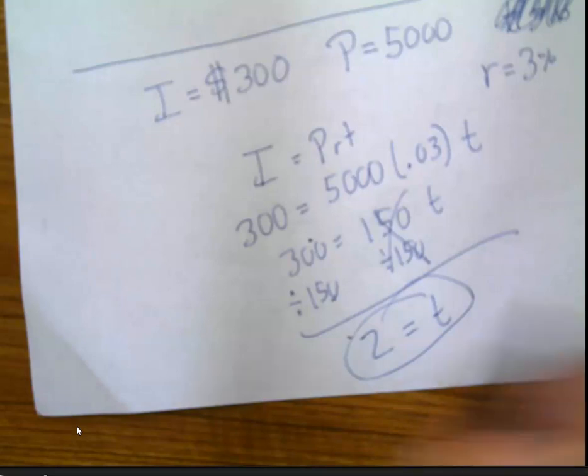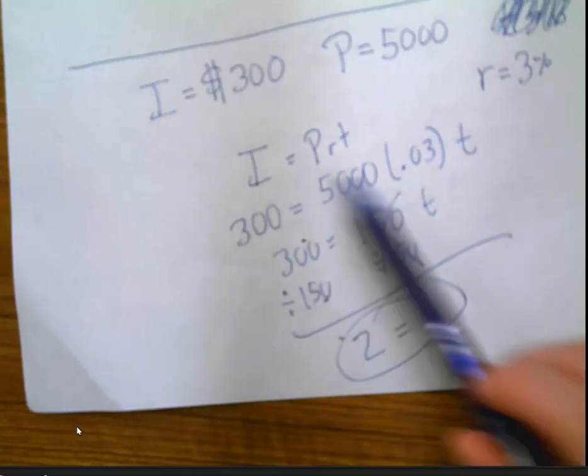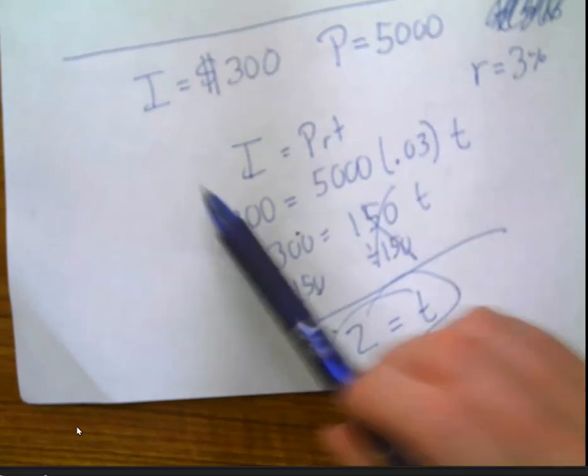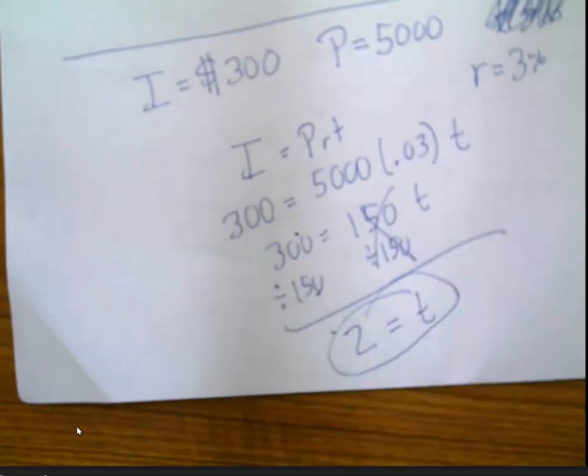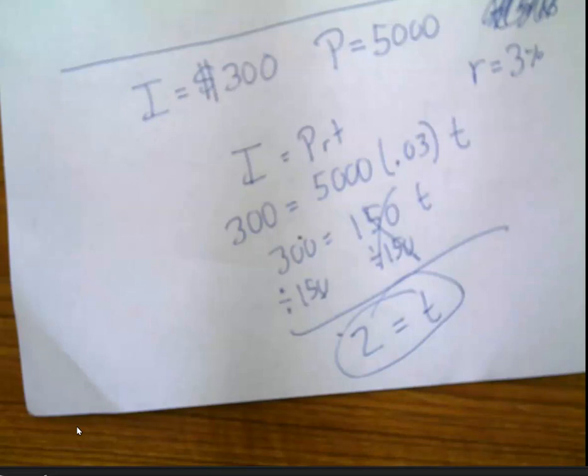So it's the same process every time you plug it into I equals PRT. You times the two that you know. You divide the interest by the two that you know. And that will give you answer. You've got this. I want you to practice it. And thanks for being awesome and having your work done.